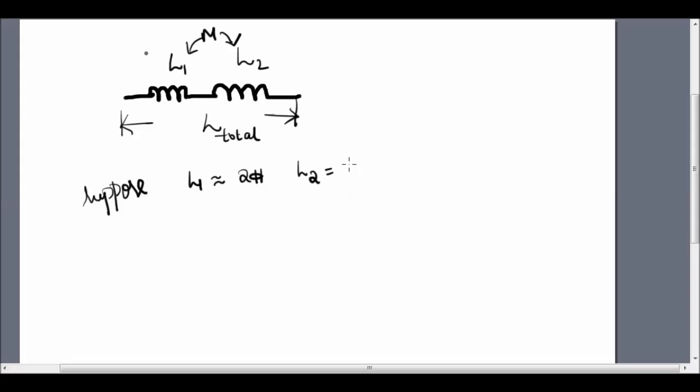...and also L2 is 2 Henrys, and the coefficient of coupling K is 0.1, then you can use this formula which is given as L1 plus L2 plus or minus 2M, where M is nothing but K root over L1 L2.